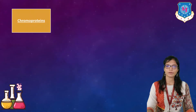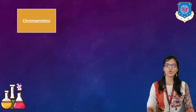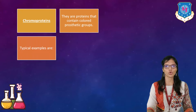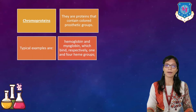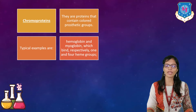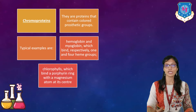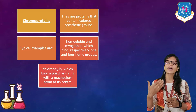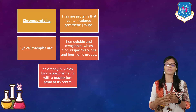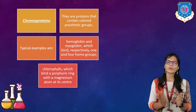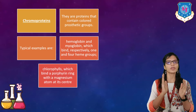The next type is chromoproteins — proteins that contain colored prosthetic groups. Typical examples are hemoglobin and myoglobin, which bind respectively four and one heme groups. Chloroproteins such as chlorophylls bind a porphyrin ring with a magnesium atom at its center. As you can see, it combines magnesium and protein, forming a particular kind of structure in chromoproteins.